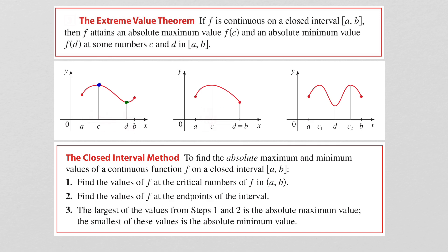We're guaranteed to have this at some numbers c and d in our interval. In the second drawing, we have an absolute maximum value at c, but now our minimum value is actually at the endpoint b. So it is possible for your maximum or minimum to occur at the end. And in the last diagram, you can see that we have two maximums — those are level with each other — and one minimum. So you might even have more than one point at which the maximum and minimum values occur.